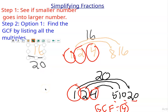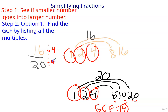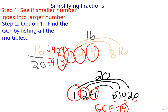So let's go ahead and do that. Divide by 4 over 4. And 16 divided by 4 is 4. And 20 divided by 4 is 5. So my answer is 4 fifths.